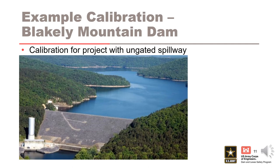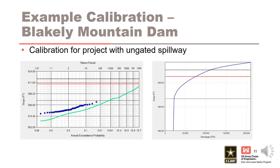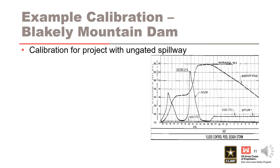Now let's look at calibration for another example project, Blakely Mountain Dam, which has an ungated or uncontrolled spillway. If we start by assuming the maximum discharge capacity for the regulating outlets, we can see that the stage frequency curve predicted by our model has poor agreement with the observed events. The reservoir model plot shows that releases during the rising portion of a typical flood event are practically zero when the stage is below the spillway crest. It is common for flood control dams to release minimum flows below the spillway crest during a flood event to maximize downstream benefits, and then release the stored flood water only after the peak of the event has passed. Therefore, a discharge of practically zero would be more appropriate in our model for elevations below the spillway crest.